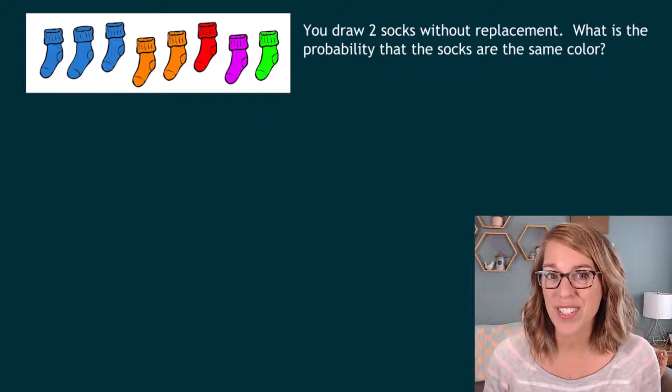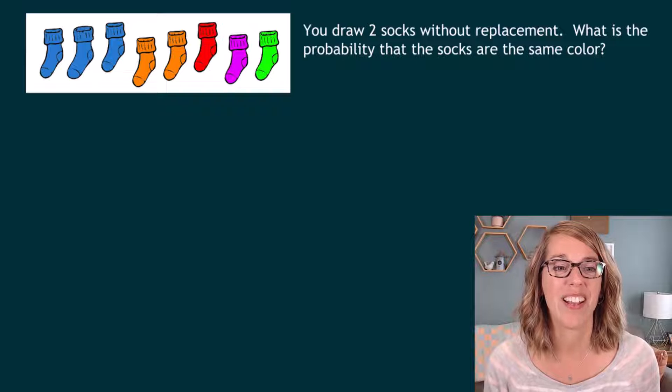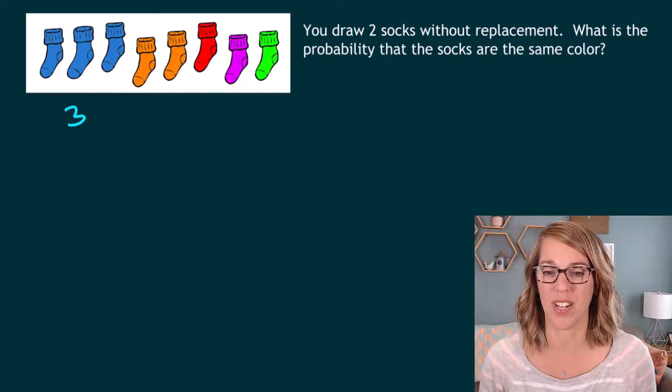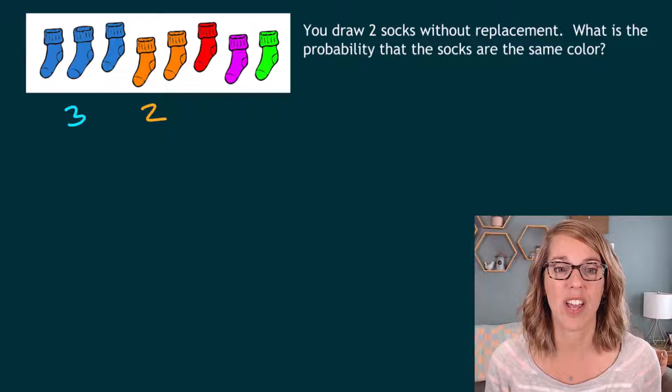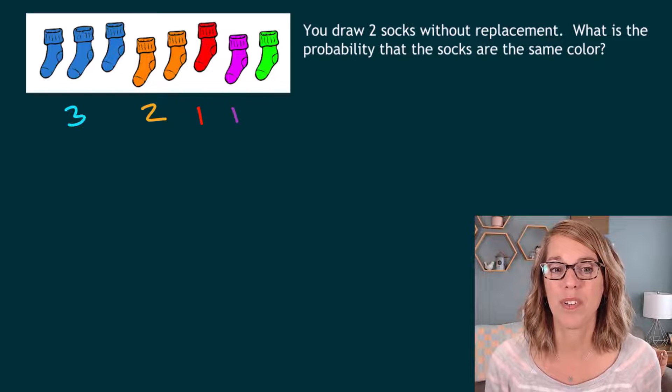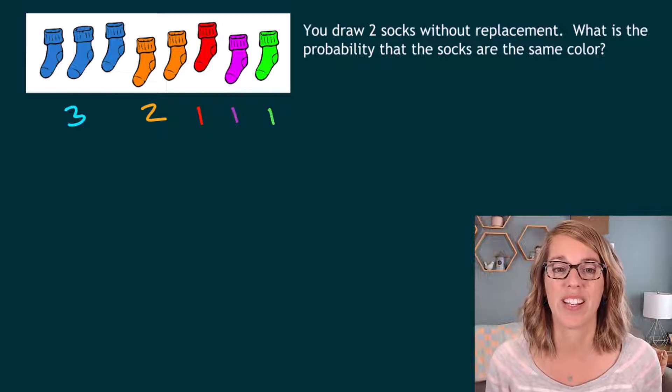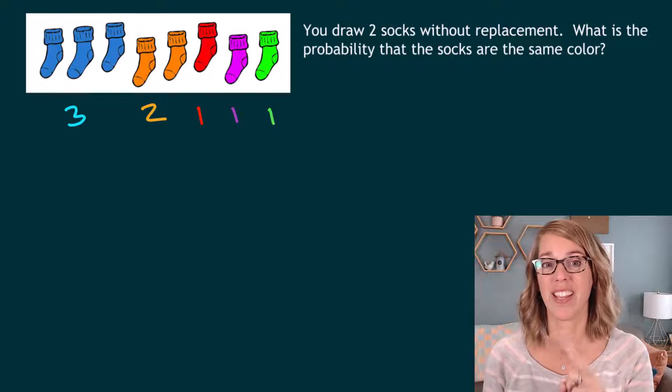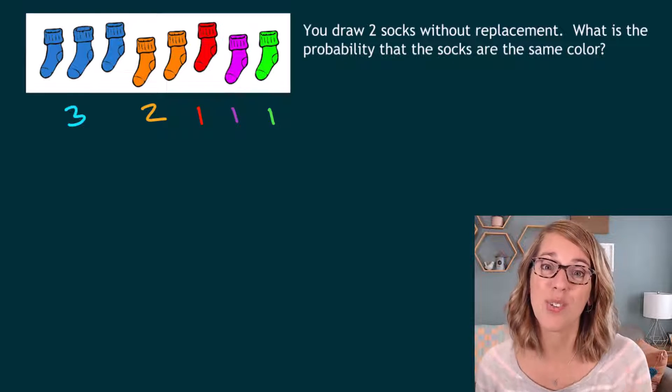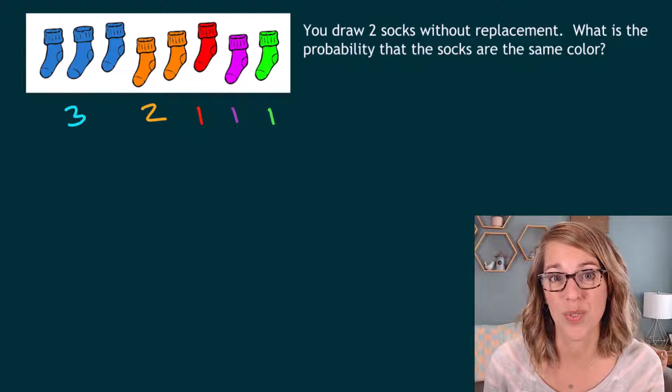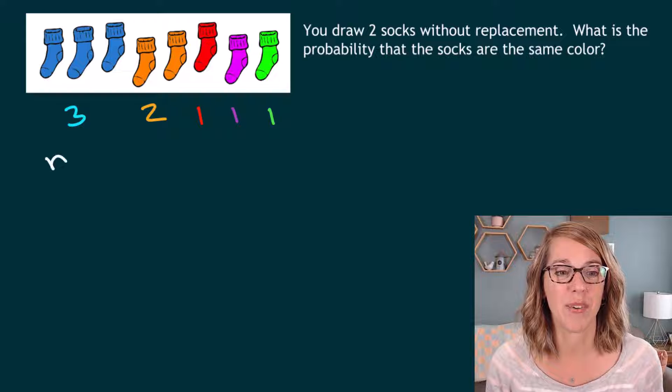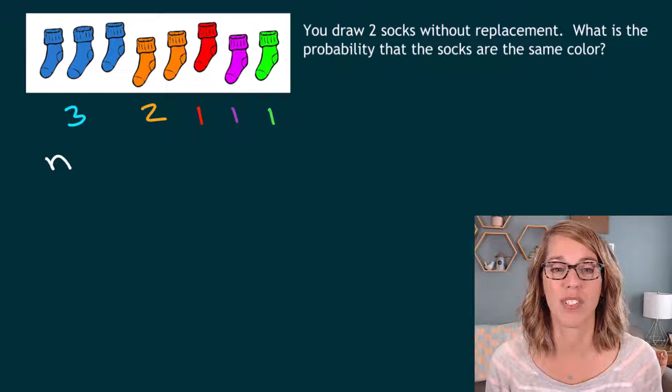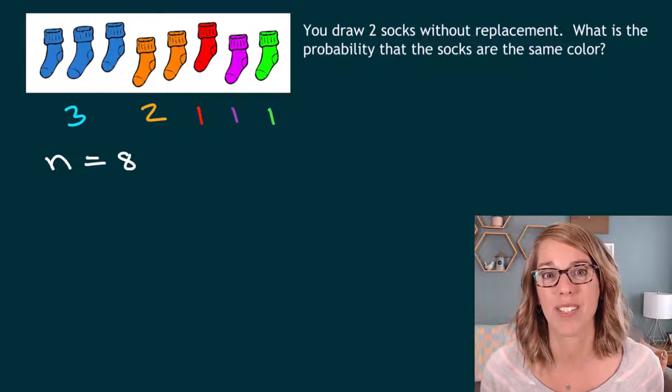I want to start by counting the colors that we've got. I've got three blue socks, two orange socks, and then one each of the rest. So that's one red, one purple, and one green. You'll notice that the only way that I can get a matching pair is with two blue or with two orange. I also need the total number of socks here. So three plus two is five plus those ones give me eight possible socks.